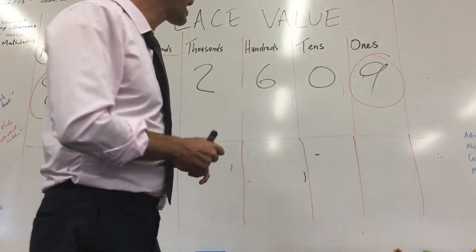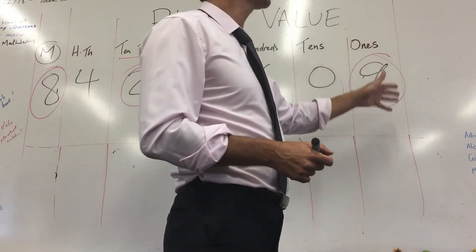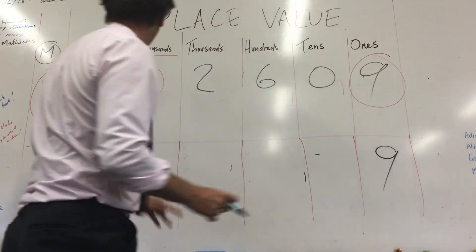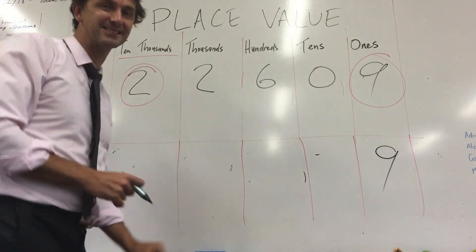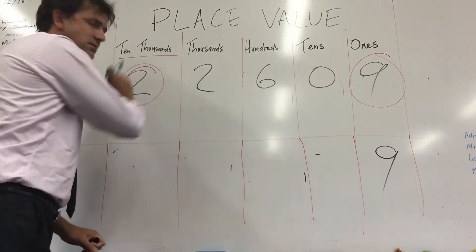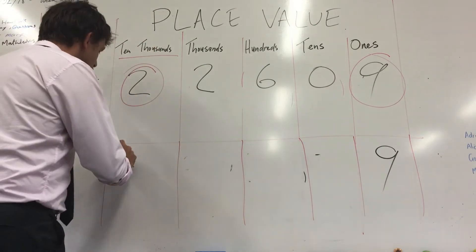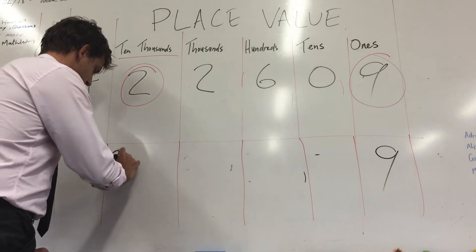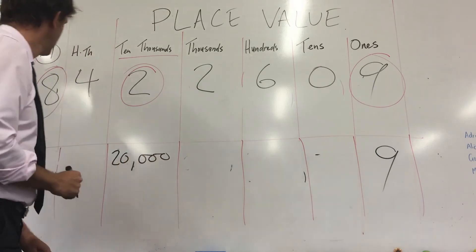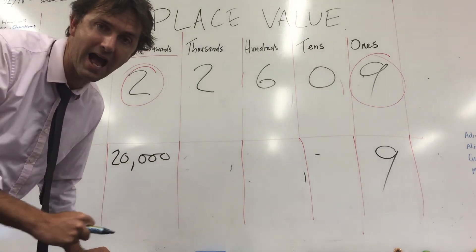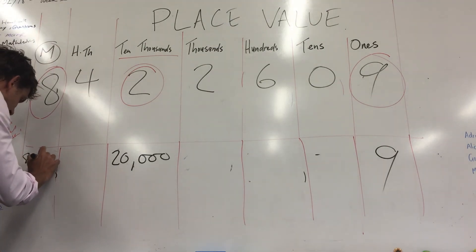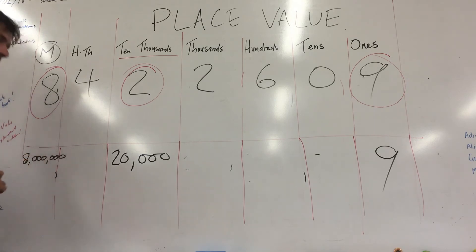I hope you paused. This nine is nine ones, so it's actually nine times one which is nine — that nine equals nine. This two here is in the ten-thousands column, so that's not equal to two. That's two lots of ten-thousand, which is twenty thousand. What about this eight? It's in the millions column — that is equal to eight million. Eight with six zeros after it. What a big number.